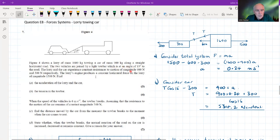The lorry and the car experience constant resistances to motion of magnitude 600 and 300 newtons. The lorry's engine produces a constant horizontal force on the lorry of magnitude 1500 newtons. Find first of all the acceleration of the lorry and the car.